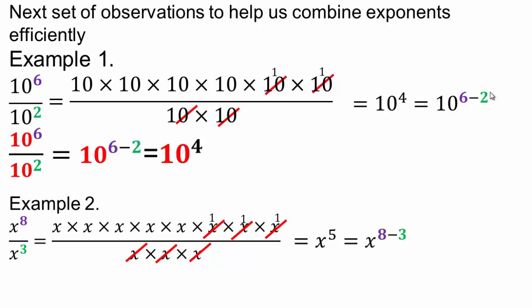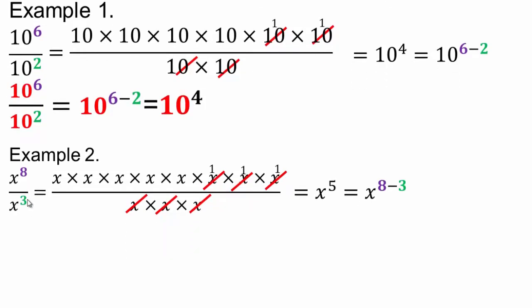Can you see that? It's very, very important you pay attention here. When you have the same base to an exponent divided by the same base to an exponent, equivalent fractions allow us to simplify. When you divide a base to an exponent by the same base to another exponent, you can subtract the exponents and get your answer.